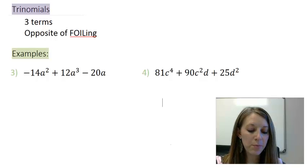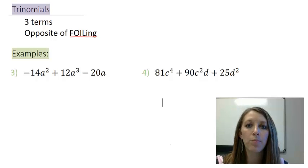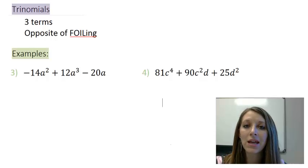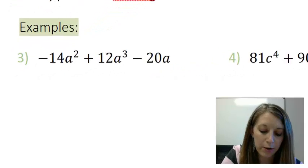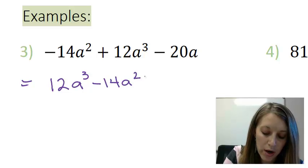So let's start with example 3. There's a couple of things going on here that we need to talk about before we even get to the trinomial part of this problem. First of all, this is a polynomial, but it's not in its proper order. It's not in the descending order we like it to be in. So before we do any factoring of any kind, we should always put our polynomials in descending order. So that changes it to 12a³ - 14a² - 20a.